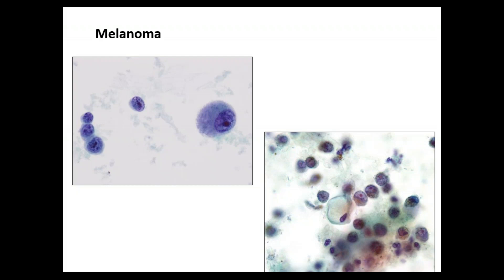Then comes melanoma — something to know wherever in the body you are. It could be primary or metastatic. Melanomas have eccentrically located nuclei, sometimes very high NC ratio, and can appear epithelioid or spindled. Telltale signs include brown cytoplasmic pigmentation and cherry red prominent nucleoli. I don't recommend jumping at every cell with prominent nucleoli as possibly melanoma in urine cytology; however, keep it low on your differential in case there is melanoma involving the bladder or urethra.